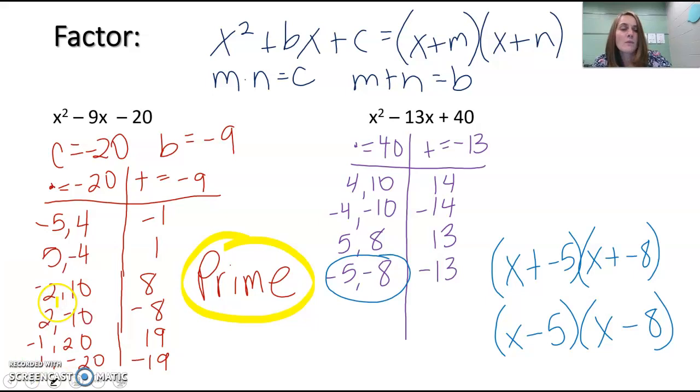You could flip-flop them—you could say (x - 8)(x - 5), and it would still be the same answer. Those are your two binomials that are the factors of x² - 13x + 40.